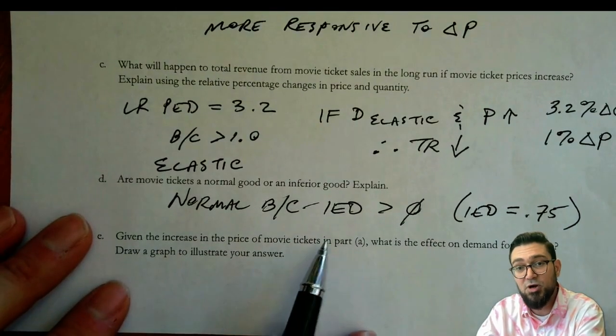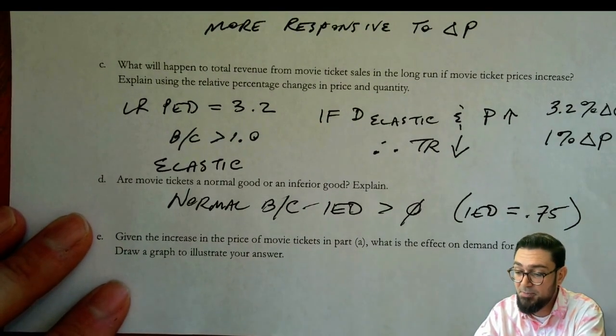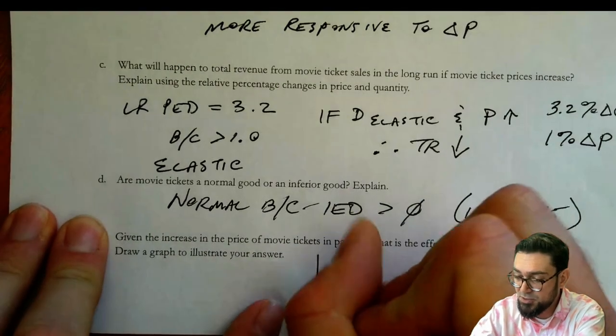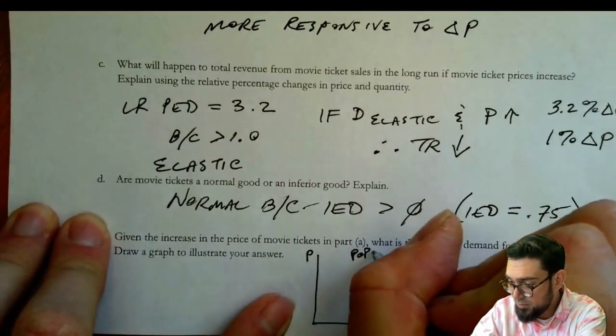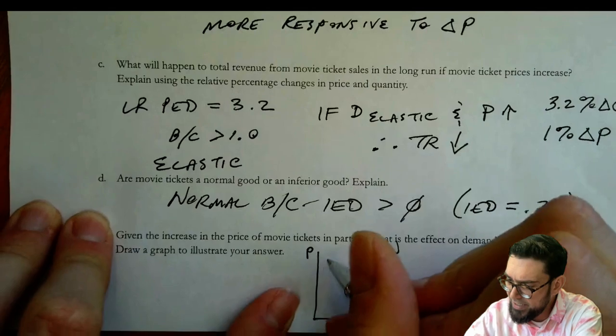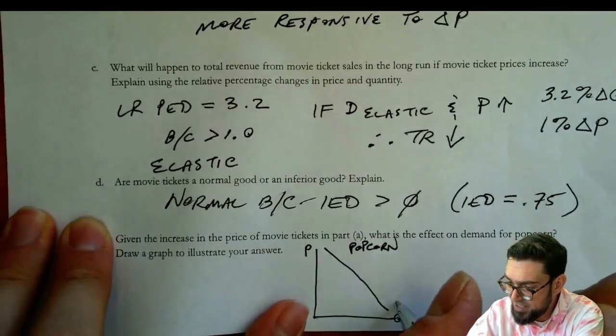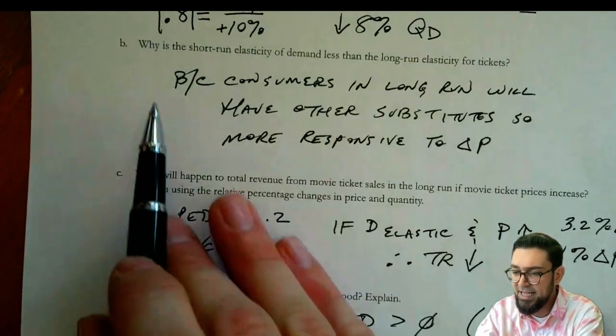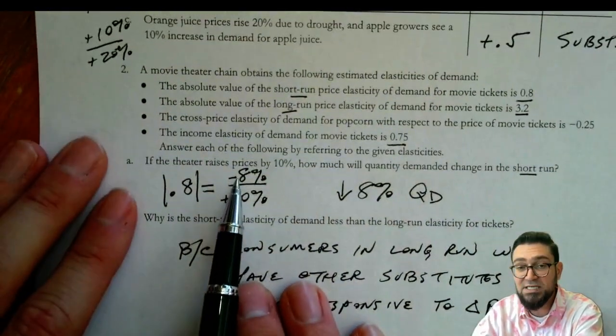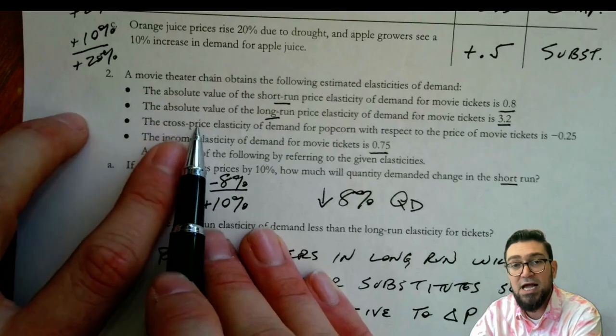Given the increase in the price of movie tickets in part A, what's the effect on the demand for popcorn? Draw a graph to illustrate your answer. So this is going to be the graph of popcorn. And it's just asking me for the demand for popcorn. So I'm just going to put the demand curve here. And I know that in A, it said the movie tickets are going up by 10%. Let me look at what happens.